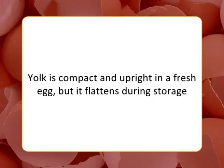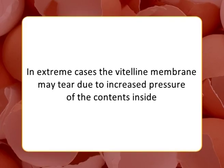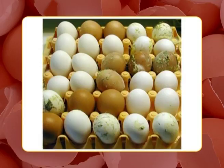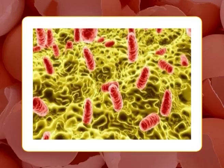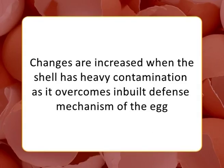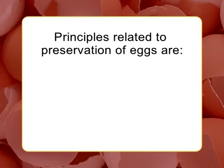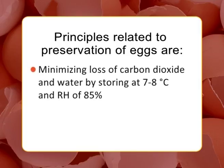The yolk is compact and upright in a fresh egg but flattens during storage, possibly due to migration of moisture from egg white to yolk. In extreme cases, the vitelline membrane may tear due to increased internal pressure. Microbial contamination may also occur, most commonly by Salmonella species penetrating through the egg shell. Deterioration is accelerated when the shell is heavily contaminated, overcoming the egg's inbuilt defense mechanism.